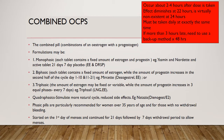Biphasic pills are particularly recommended for women over the age of 35 and for those with no withdrawal bleeding. Started on the first day of menses and continued for 21 days, followed by 7 days of a withdrawal bleed. It is important to note that the effect of combined oral contraceptives occurs 2 to 4 hours after the dose is taken, diminishes at 22 hours, and is virtually non-existent at 24 hours. Therefore the pill must be taken daily at exactly the same time; if you are more than 3 hours late, use a backup method for at least 48 hours.